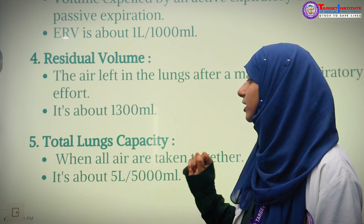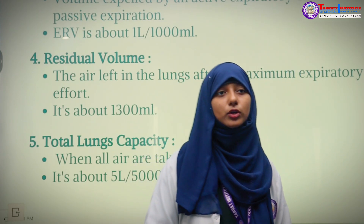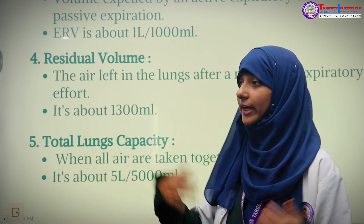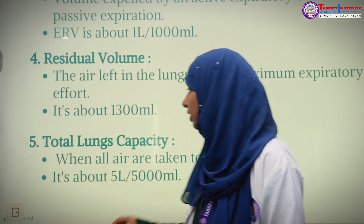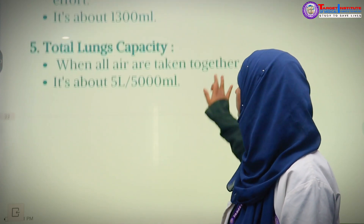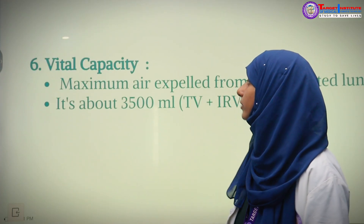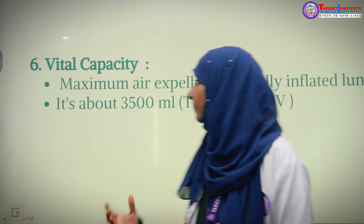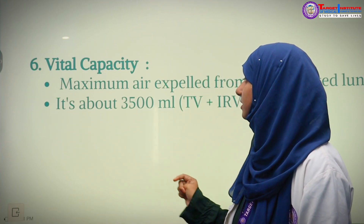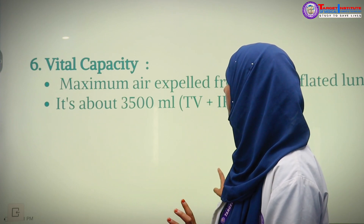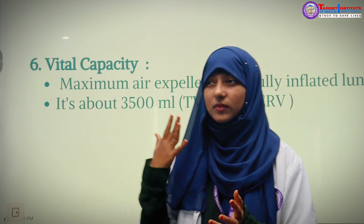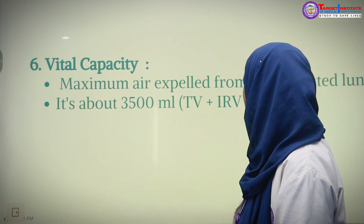Total lung capacity is the total of all air volumes taken together — approximately 5000 ml (5 liters). Vital capacity is the maximum air expelled from fully inflated lungs — approximately 3500 ml. To calculate vital capacity, we add tidal volume, inspiratory reserve volume, and expiratory reserve volume.